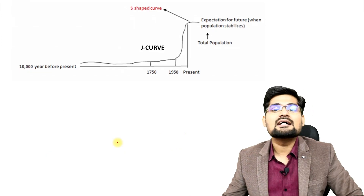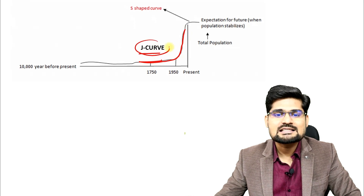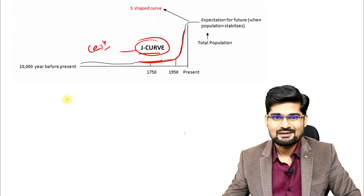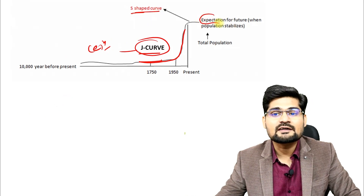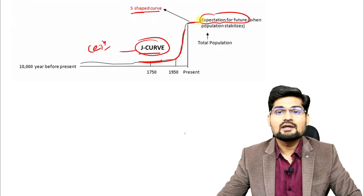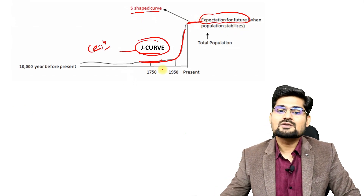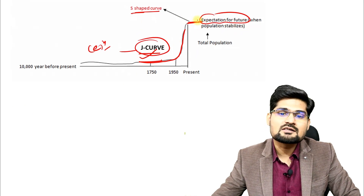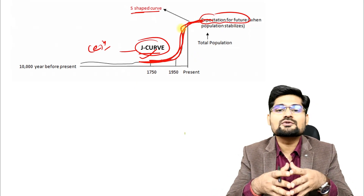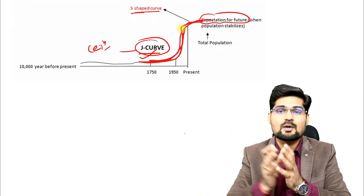The curves defined here are the J curve and the S curve. The J shape simply means the exponential growth of population. When you say S shape, it is based on the expectation for the future where the curve goes a little flat, meaning there will be stabilization of the population and the growth will subside. So J curve and S curve are commonly used to denote the exponential growth of population and the future stabilization of population.